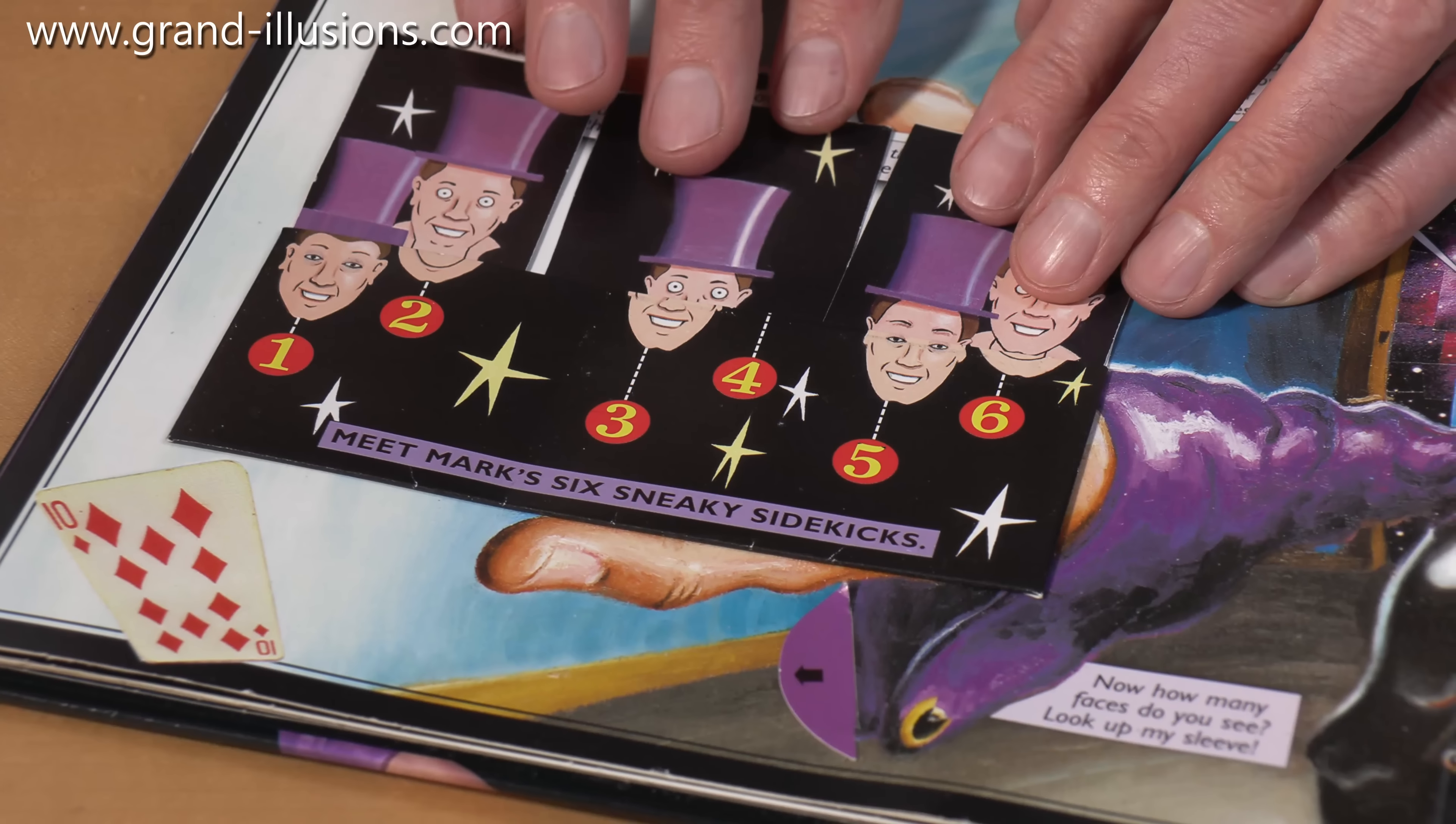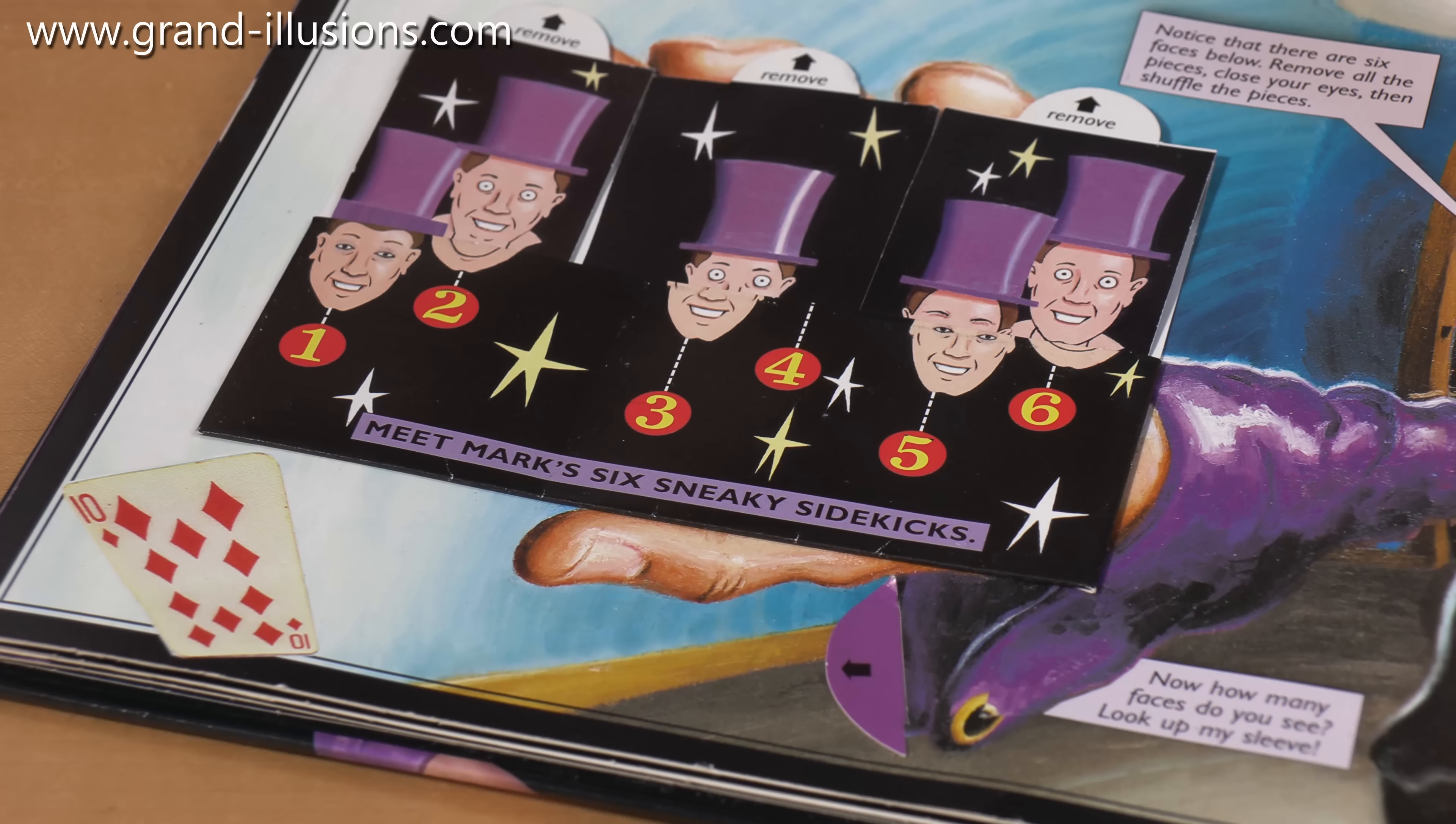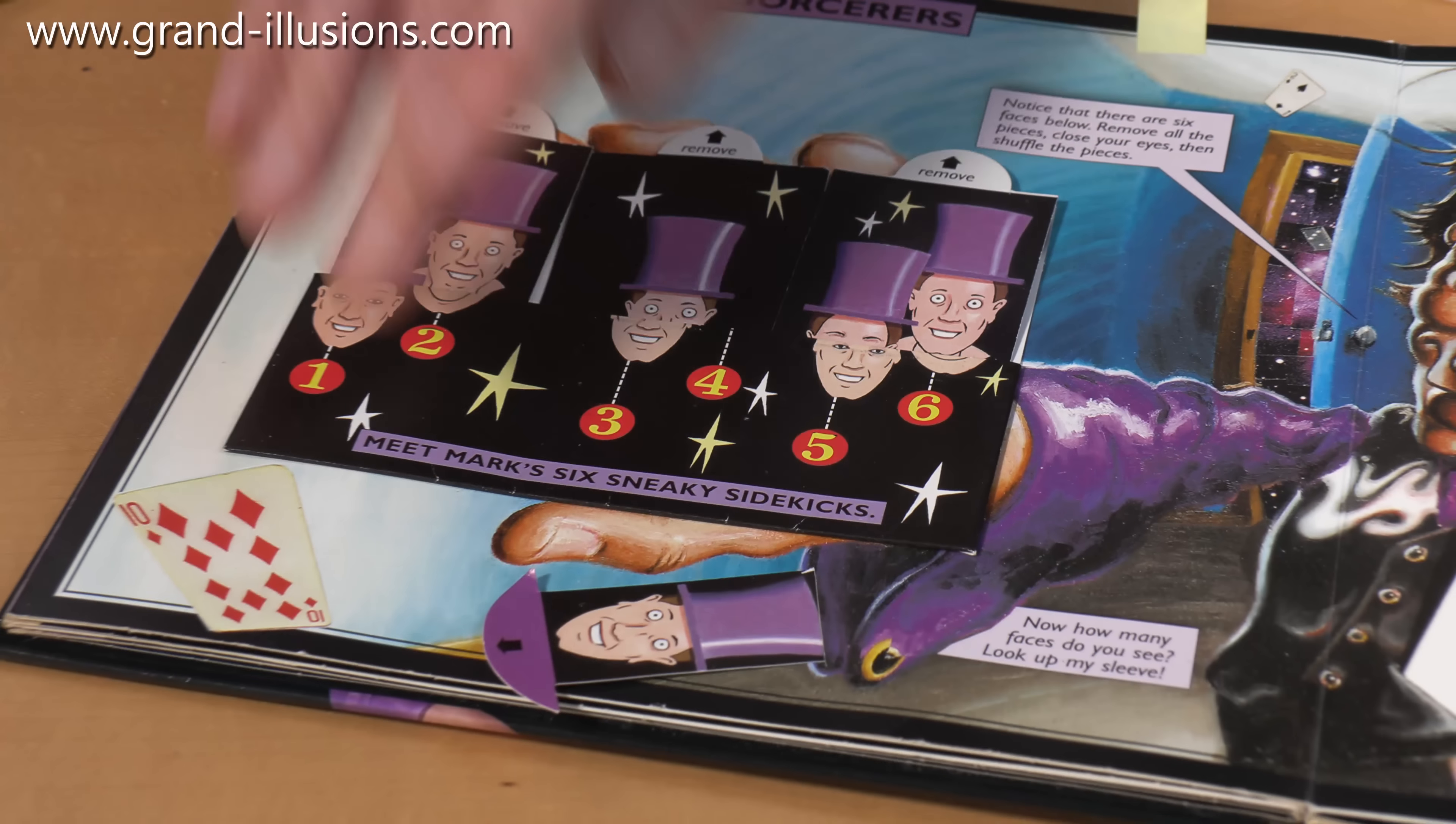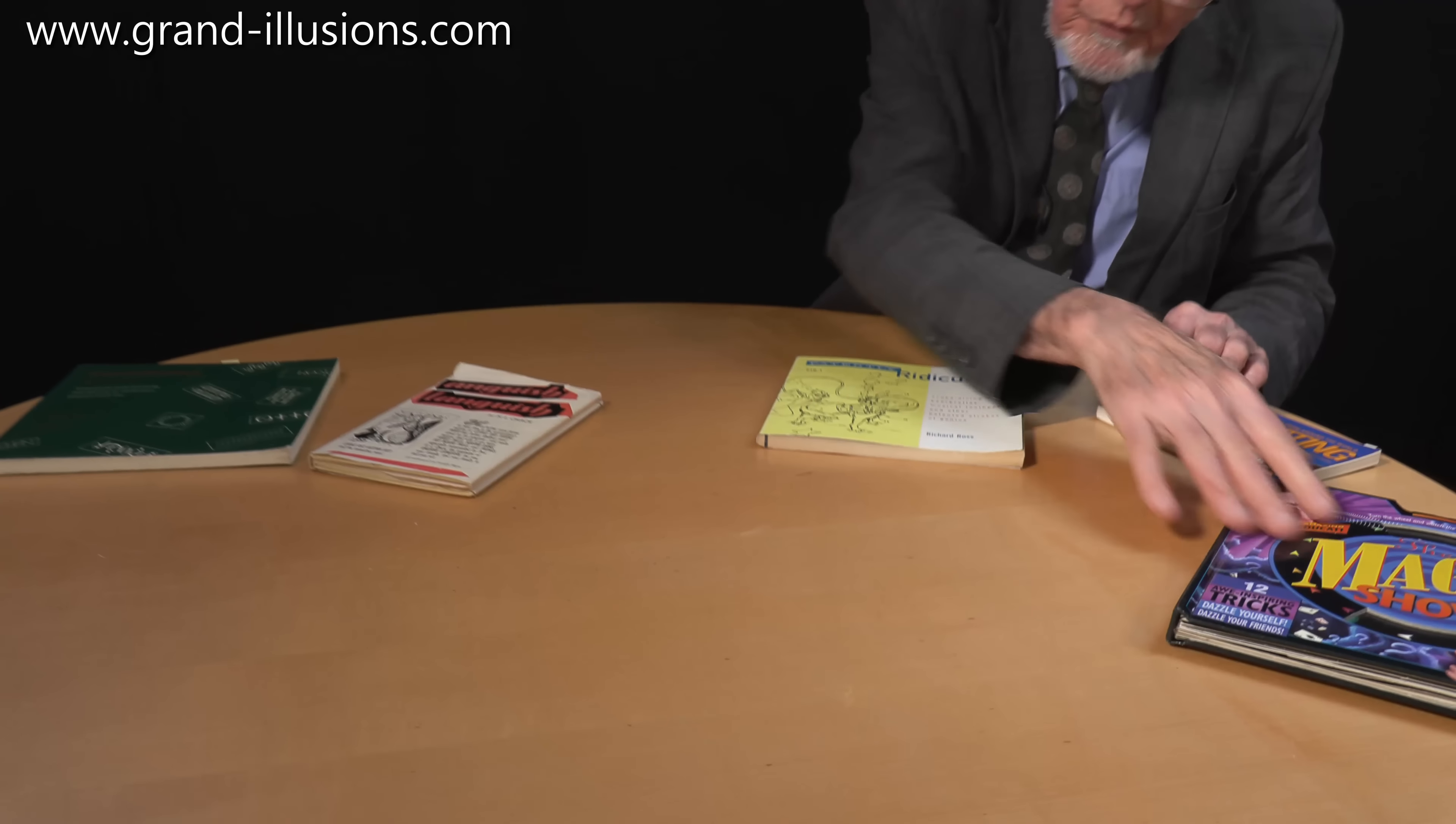But hang on a sec, Mark tells you in the text, now you've got to count it again. One, two, three, four, five. Where on earth is the last magician gone? Oh, he says in the blurb, look up my sleeve. Of course you must look up my sleeve, and there it is. What a brilliant idea, and it's been so well produced, this is a lovely job. It's very robust too. I've shown it to hundreds of people over the last 20 years, and it's still standing up and still performing, and giving people the fun of being fooled.